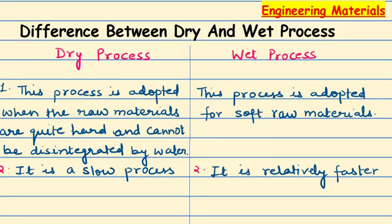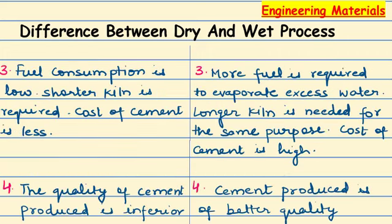In the wet process, a longer rotary kiln will be required, and in this way the cement will be prepared. The cost of cement will be higher. The dry process produces inferior quality cement, whereas the wet process produces better quality cement that provides ultimate strength — which is not achievable with the dry process.